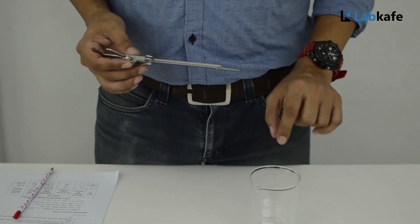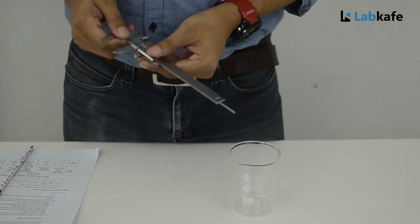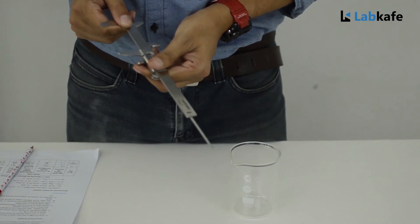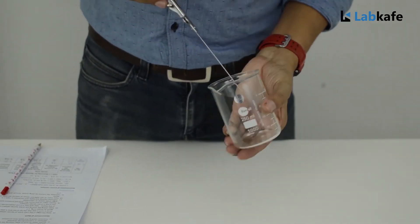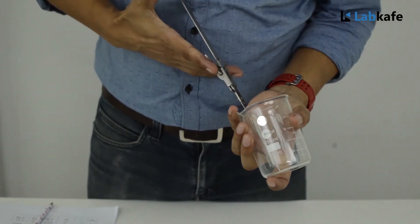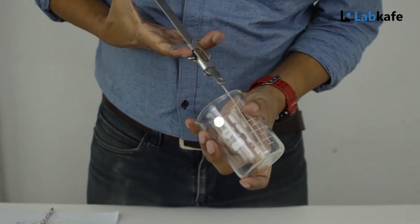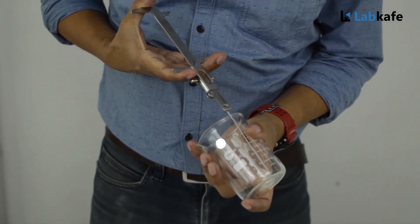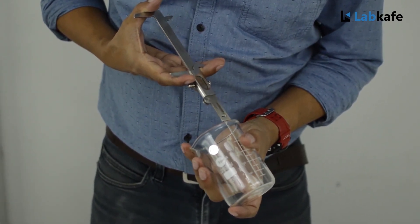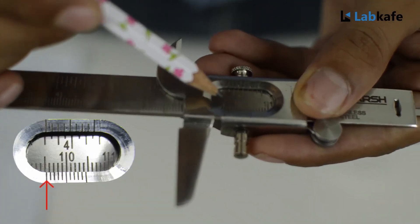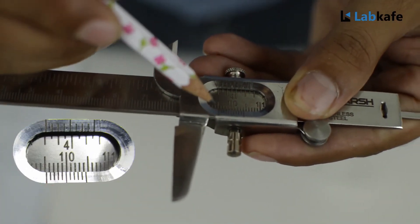Now we will measure the depth of this beaker. To do so, we will extend the strip of the vernier scale as long as possible and gently dip it inside this beaker. Then finally, we will squeeze the length until it touches the bottom of the beaker.